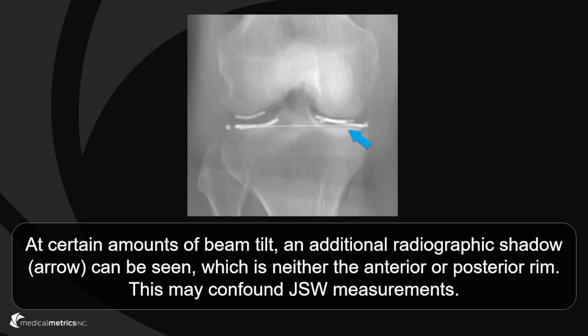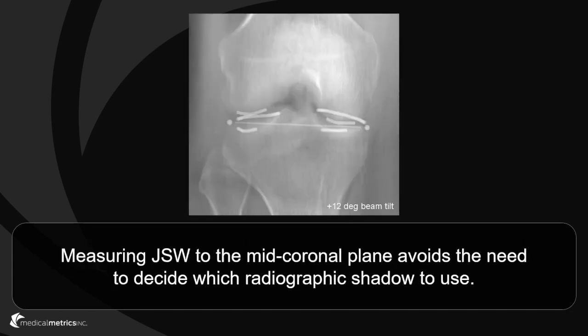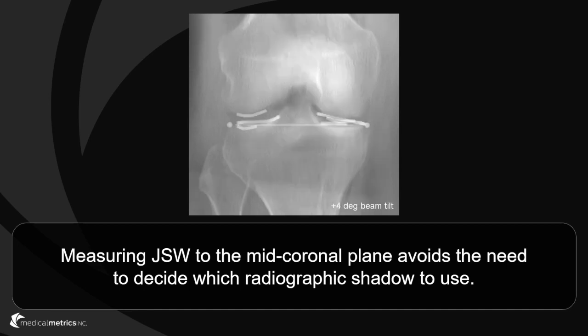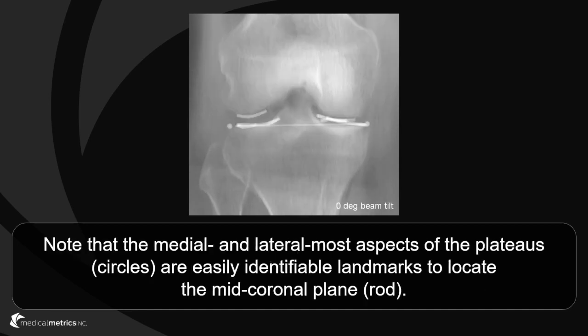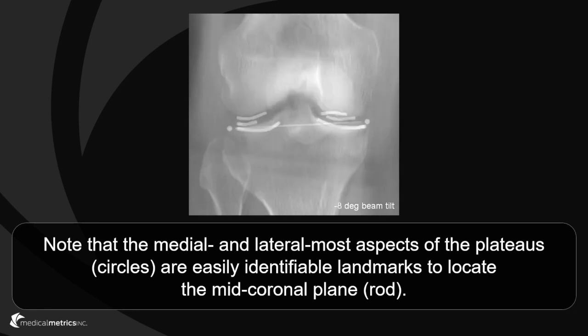At certain amounts of beam tilt, a radiographic shadow can be seen that is from neither the anterior nor posterior rims. This can confound joint space width measurements. Measuring joint space width in the mid-coronal plane avoids the need to decide which radiographic shadow to use. Note that the medial and lateral most aspects of the tibial plateau are easily identifiable landmarks to locate the mid-coronal plane of the tibia in radiographs.